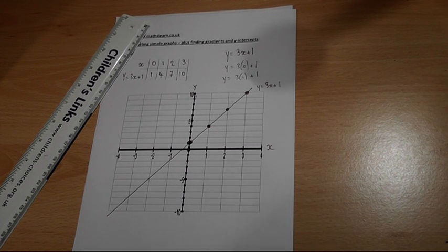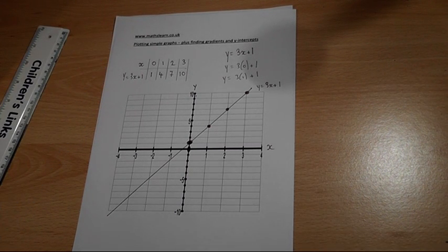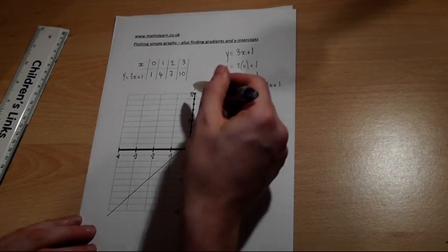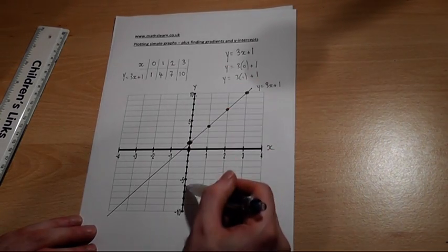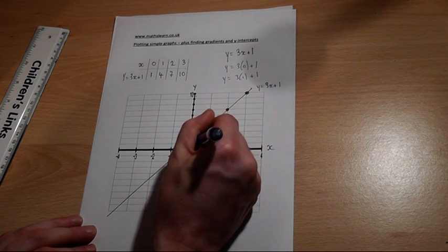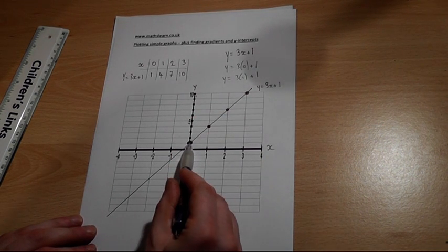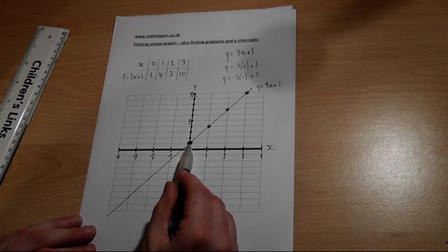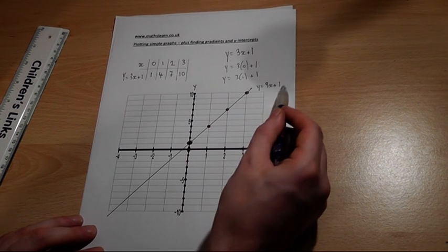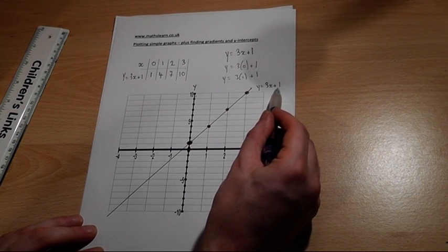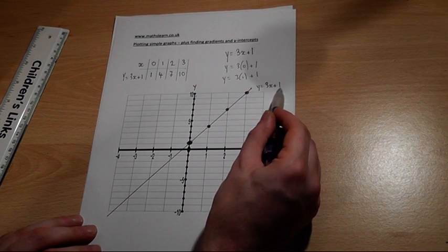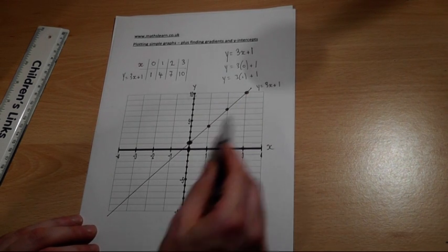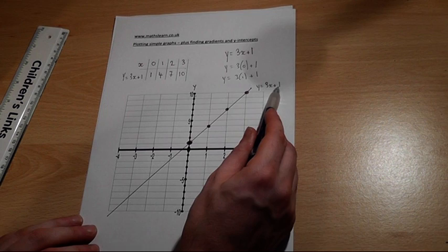I just want to make two observations here. Now where the graph cuts the y axis, this value here, is called the y-intercept. This value here of 1 always equals the number you add or subtract in the equation. So that number there is called the y-intercept.